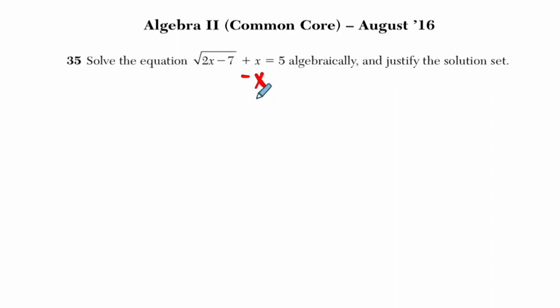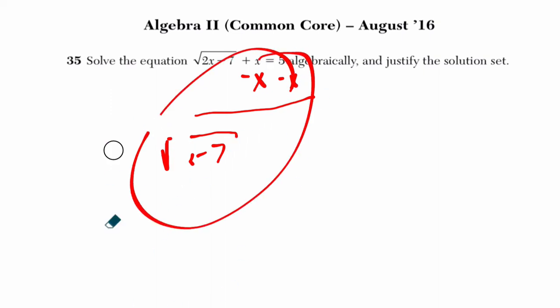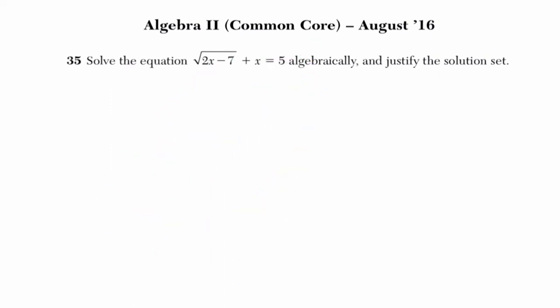So to do that, I'm going to subtract x on both sides, and I get, a little sloppy, sorry, the square root of 2x minus 7. I'm going to start over. This does not look good. I'm going to erase this. Okay, let's try that one more time. You know what? Maybe I'll zoom out so the pen doesn't look as rough.